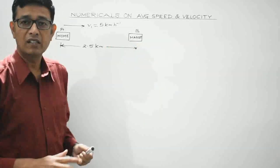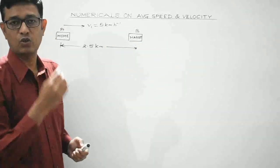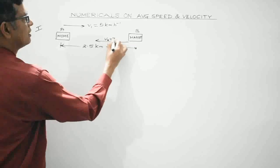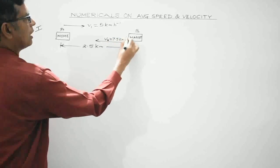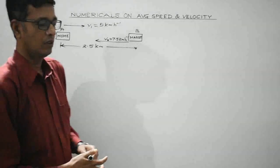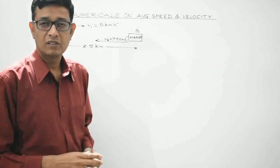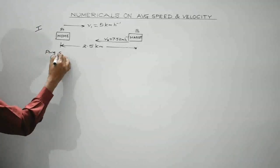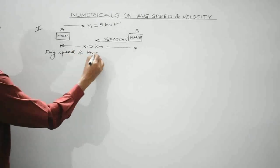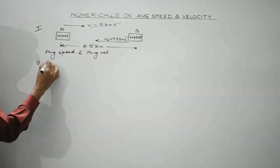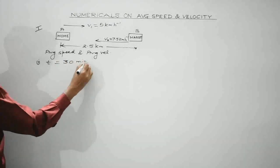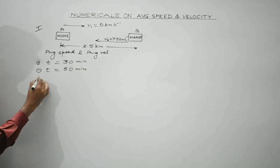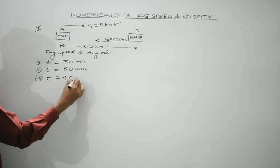On finding the market closed, the person comes back to his home with a constant speed of 7.5 km per hour. The question asks us to find the average speed and average velocity during the time interval t = 30 minutes, t = 50 minutes, and t = 40 minutes.